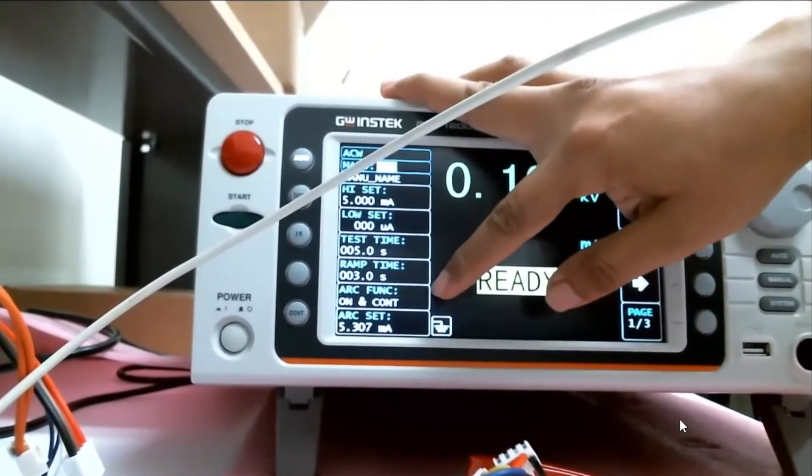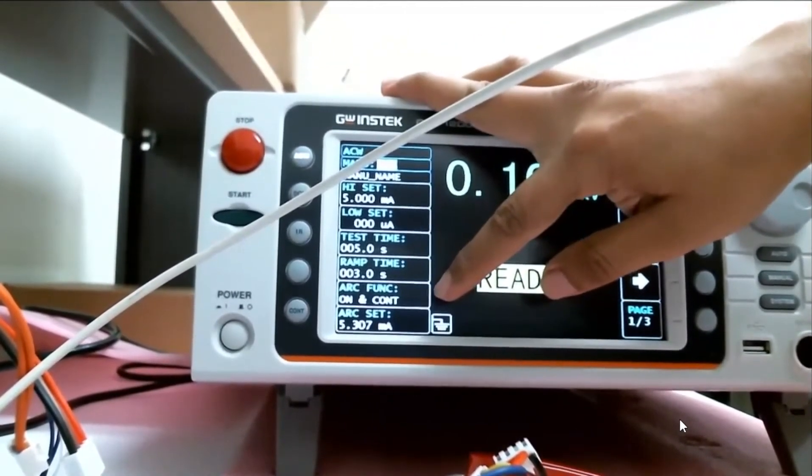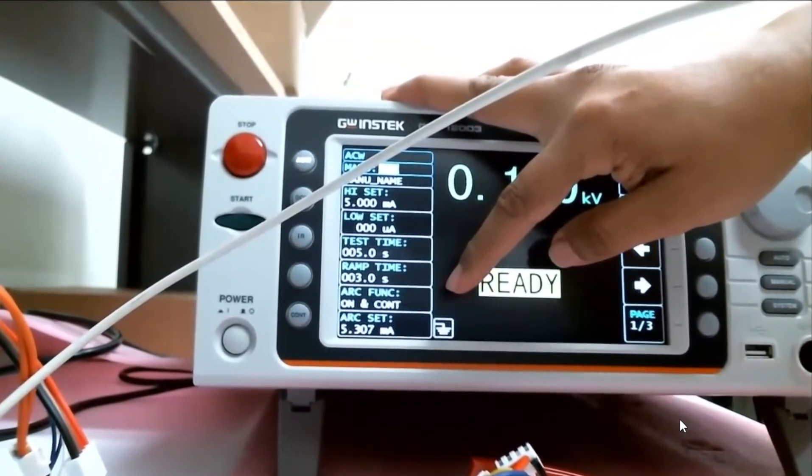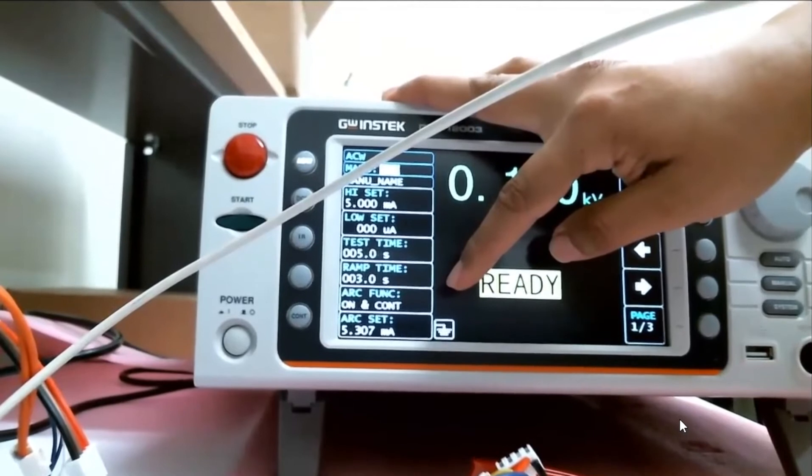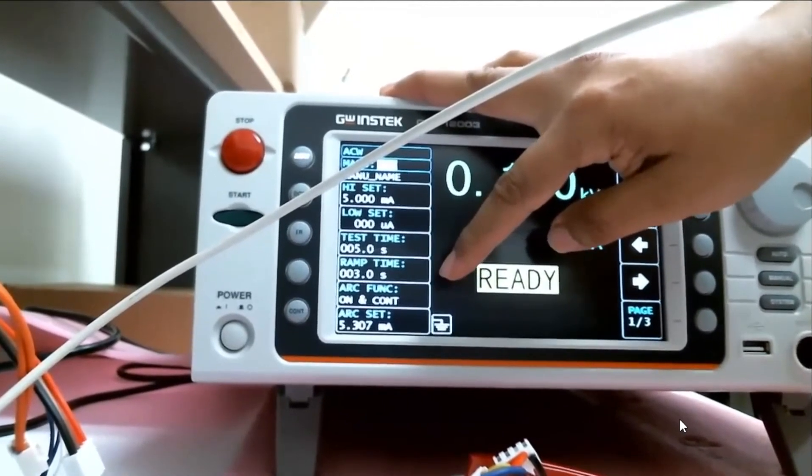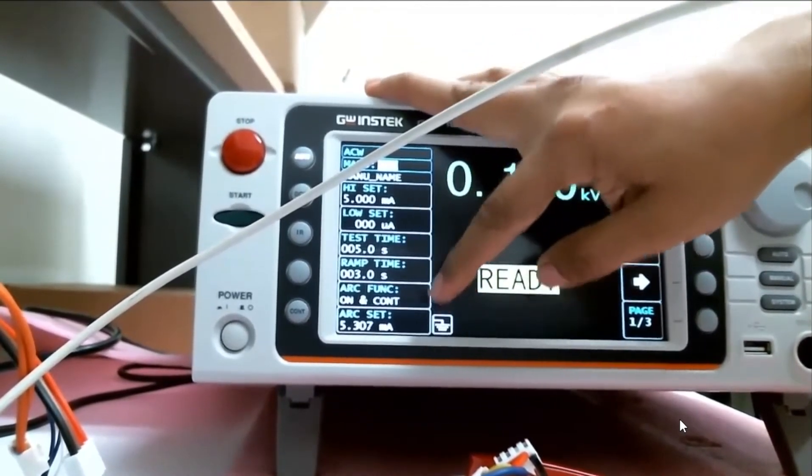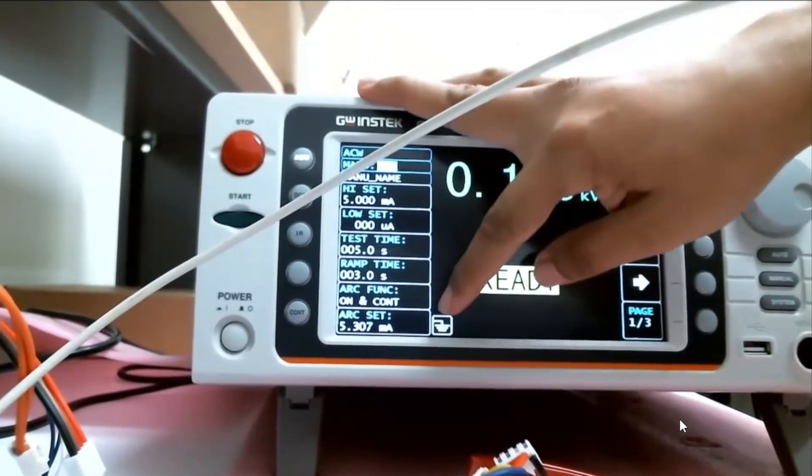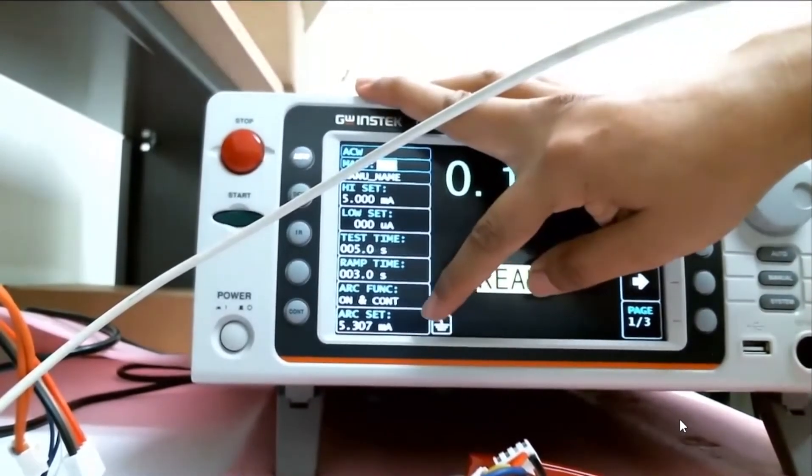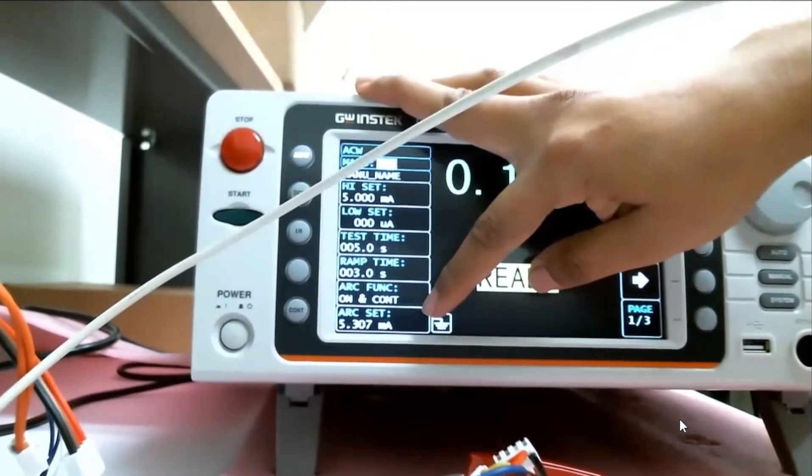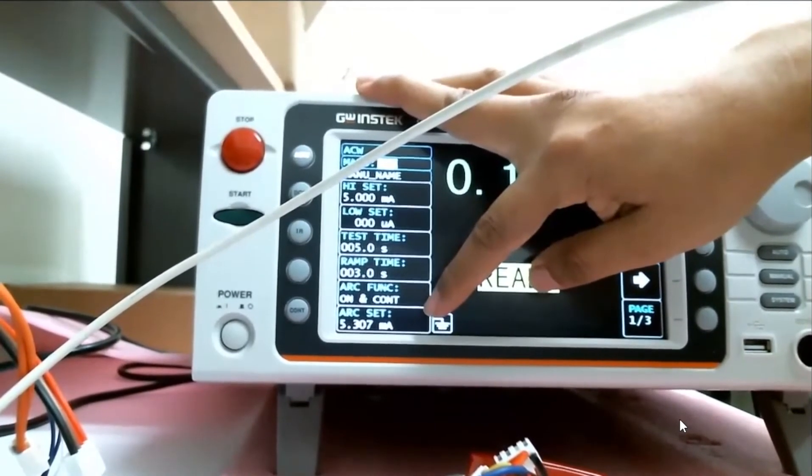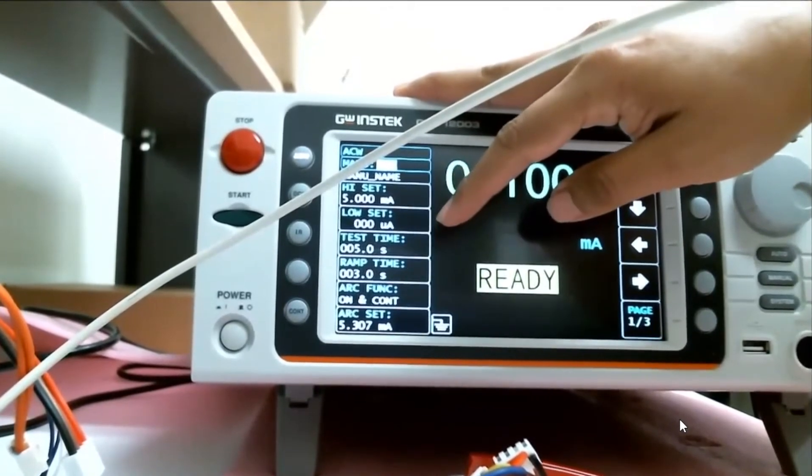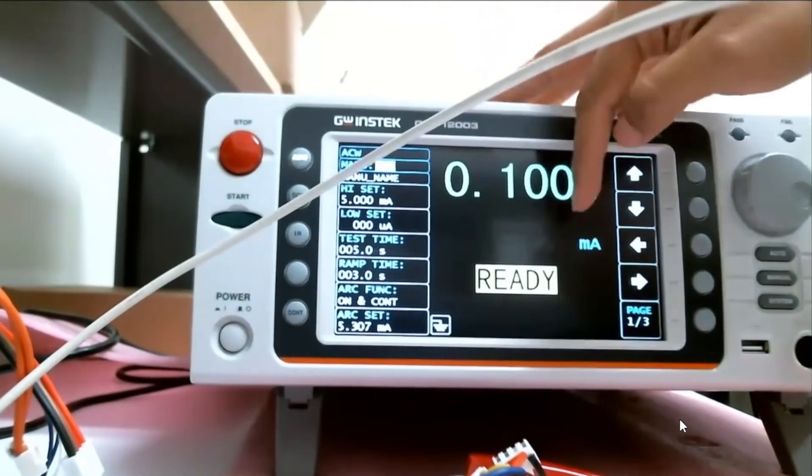My arc event, I have it on, so it continues. What that means is if it detects an arc, it will continue the test, it won't stop it. And my arc set is actually above what my high set is. So if my arc event happens at 307 microamps more than my high set in milliamps, it will detect it and it will show up on the screen.